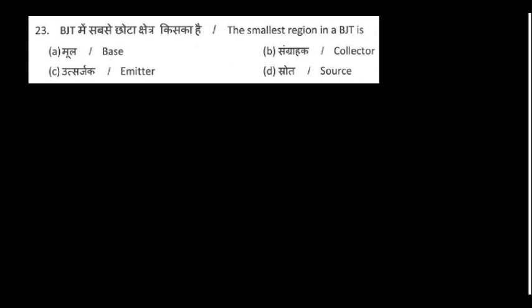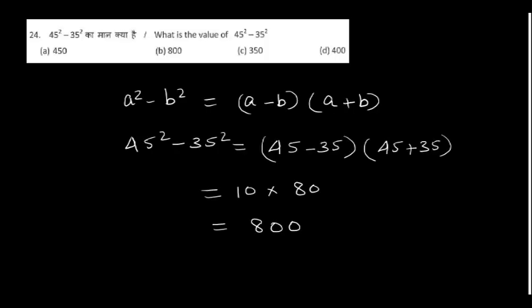The smallest region in a BJT is the base, the thinnest region. What is the value of 45 square minus 35 square? Answer is 800 using the a square minus b square formula.